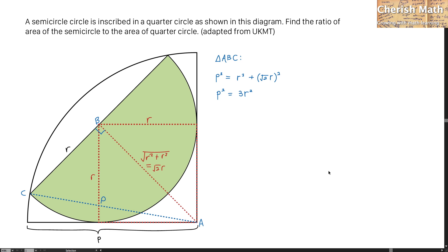For now, I'm going to work out the ratio of area of the semicircle to the area of the quarter circle. That is one half pi R square for the area of the semicircle, while for the area of the quarter circle, that would be one quarter pi P square. I'm going to simplify it where the pi cancels out.